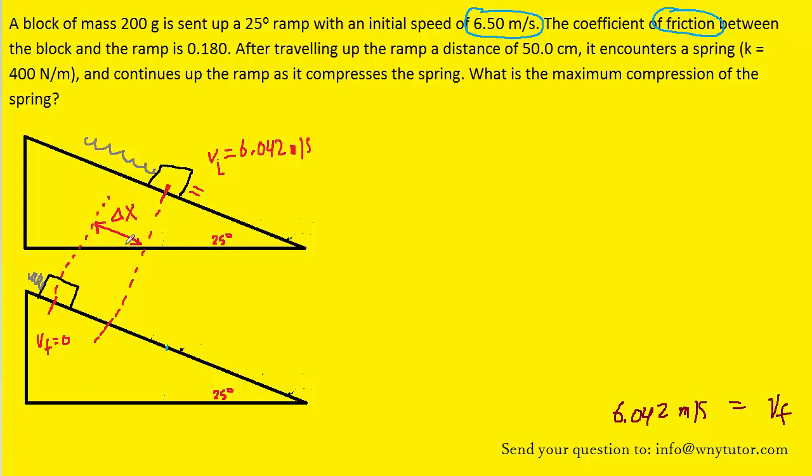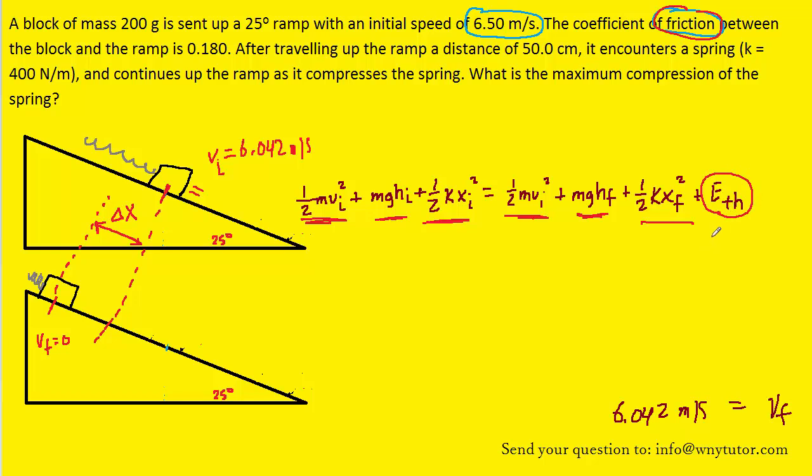Now we're going to use the same equation that we did before. It almost looks like energy conservation, but because of friction, we're going to have to include that extra ETH term. Notice that we have kinetic energy terms on both sides. We've got our potential energy terms. We now have introduced a new form of energy, which is known as the elastic potential energy, and the reason we've done that is because we have a spring. So springs that get stretched or compressed will contain some elastic potential energy. And we've got that extra ETH energy on the right side of the equation because of the presence of friction.